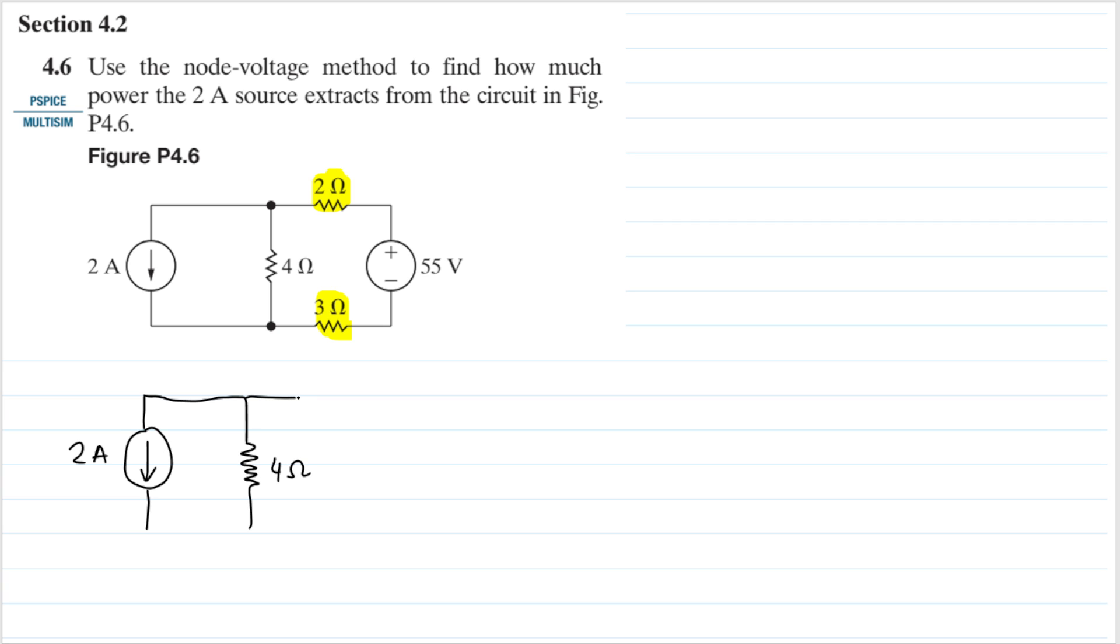And then we will have this 5 ohm resistor here, and then we will have that 55 volt voltage source.